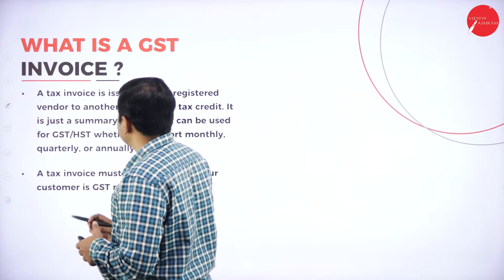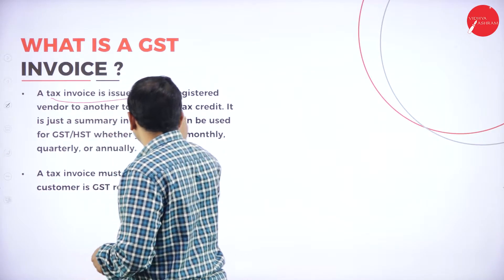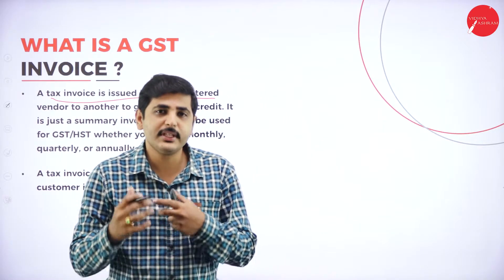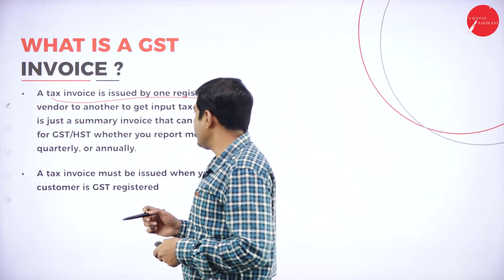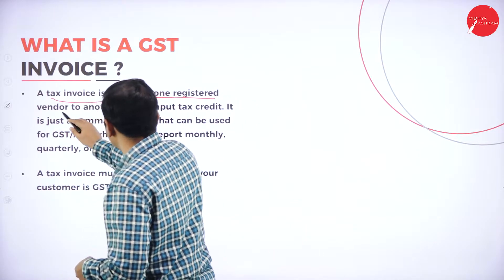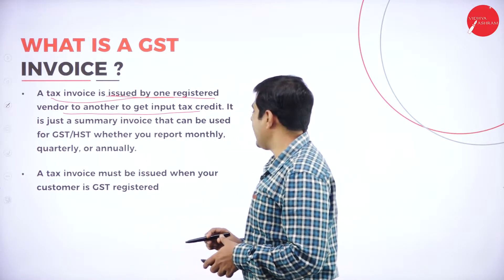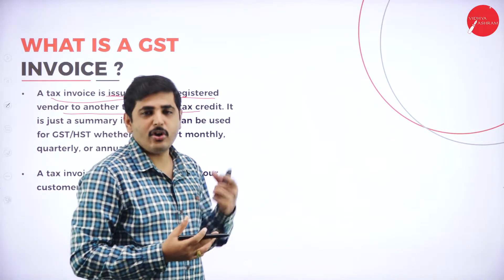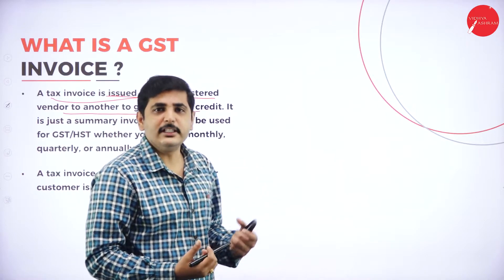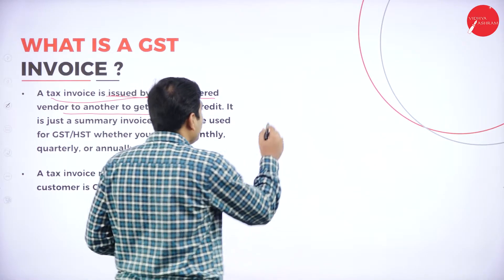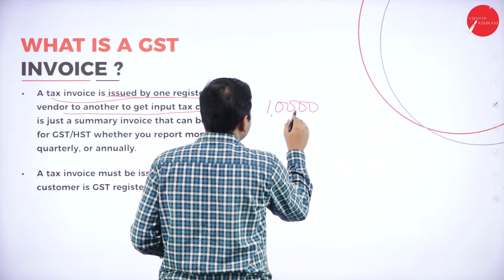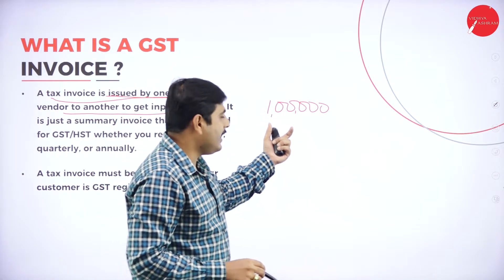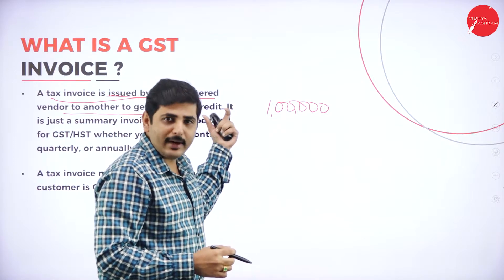What is a GST invoice? A tax invoice is issued by one registered vendor. For example, I am the registered person selling the product. It has to be issued by a registered vendor to another registered person to get input tax credit. For purchasing a product — it may be capital goods or raw materials — in order to sell the products I will purchase the raw materials. For example, I have purchased for 10 lakh rupees, and I should have all the documents for that 10 lakh rupees to provide to the tax authority.